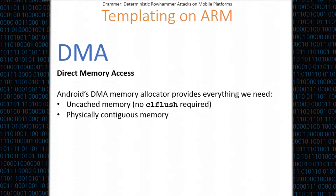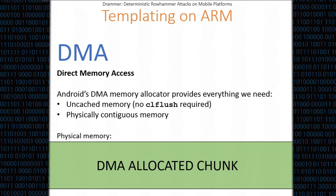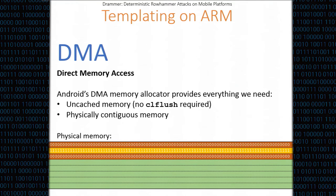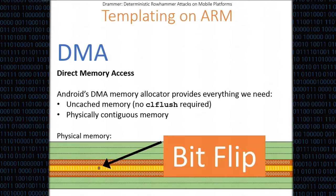Instead, we looked at direct memory access. We used Android's DMA memory allocator called ION. It basically gives us everything we need — we get uncached memory, so there's no longer a need for CLFLUSH instructions, and we also get physically contiguous memory. To give an example of how templating on ARM would look: we allocate a lot of memory, which is all physically contiguous, and then do a templating session by going over the rows, writing zeros and ones, accessing them many times, and checking if we see a bit being flipped. Here we have a bit flip — that's the short story for templating on ARM.